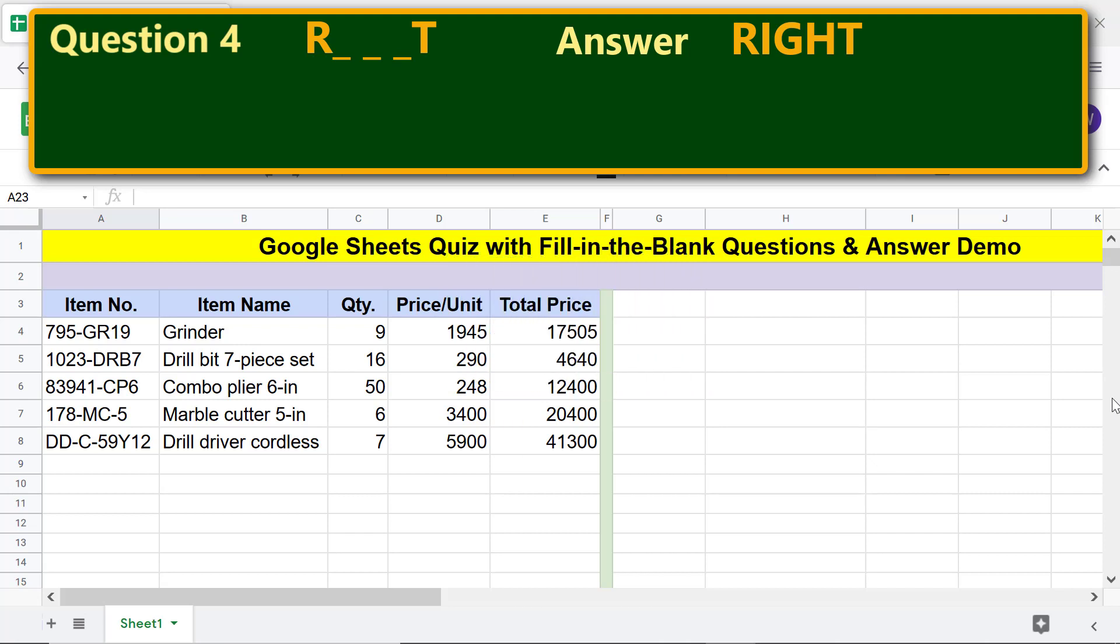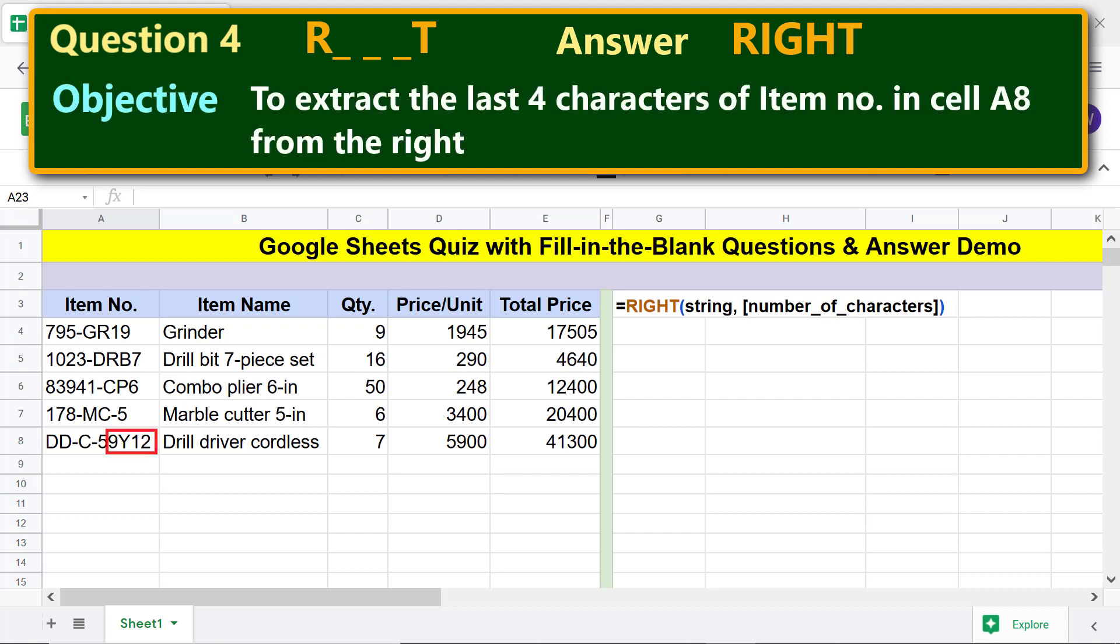Demo: here is the right function formula. The objective is to extract the last four characters of item number in cell A8 from the right. I will type the formula specifying the string and number of characters to extract from the right.